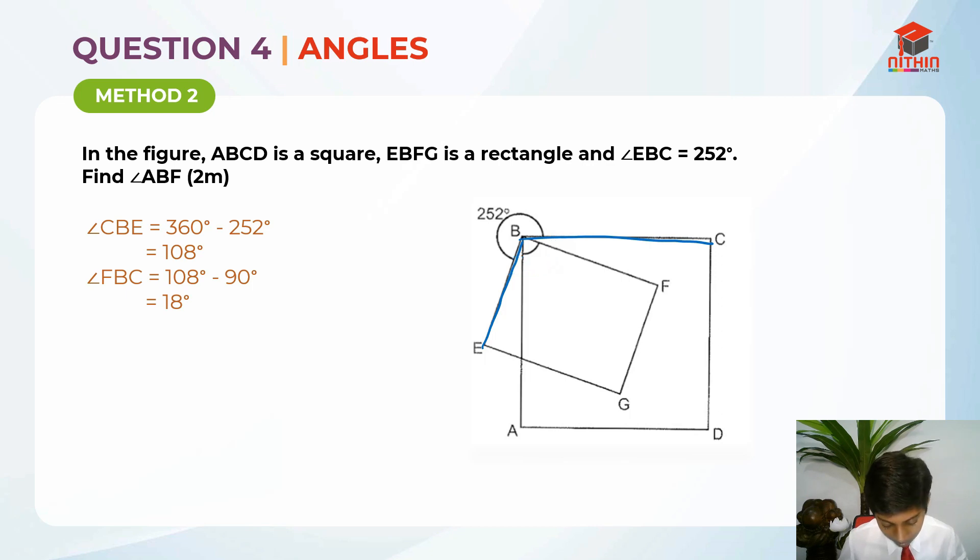What is angle FBC? Let's check out. Let's see where is FBC. Here is F, and here is B, and here is C. This is angle FBC. How did I get this? Because we know that this big angle over here is 108 degrees, right? This big angle over here is 108 degrees. We take this big angle minus the rectangle's 90 degrees over here. We can get 18 degrees as the angle FBC. Do you understand?